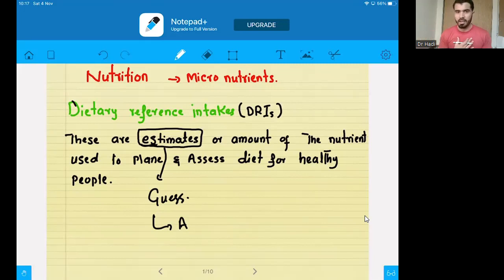These estimates are used to determine a good plan for a healthy life. Suppose, I want to have a healthy life. I want to make a plan. I want to assess which quantity is required. So, I will definitely go for dietary reference intake, DRIs. The definition is: estimates, or it is the amount of the nutrients used to plan and assess. If you are going to plan a diet in future for health, you will come to the dietary reference intake.